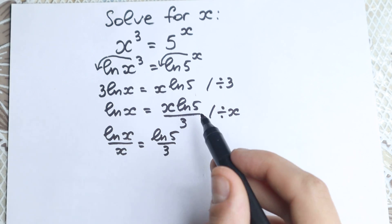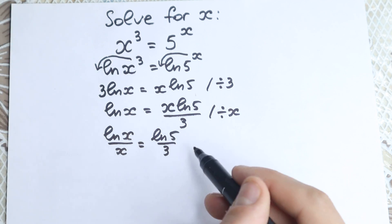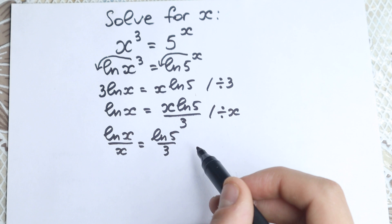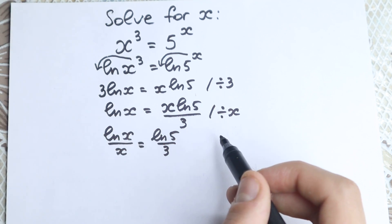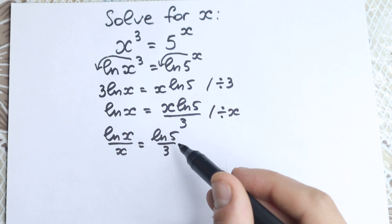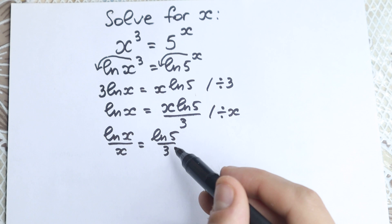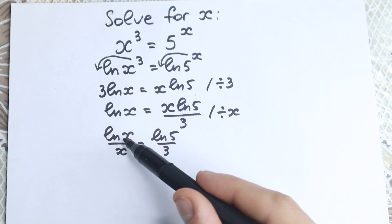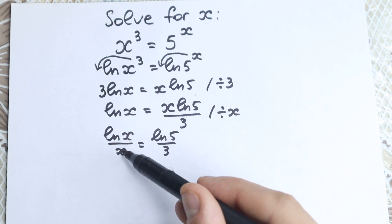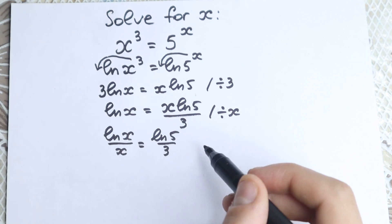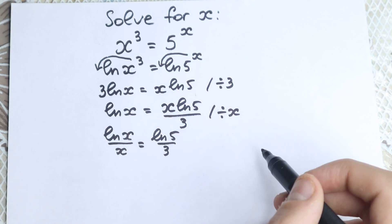We hope you understand this step — it was our first really important step: apply natural log and group constants on the right and variables on the left. Now if we look closely at this expression ln(x)/x = ln(5)/3, it's still hard to solve by inspection, and it's hard to find a great trick. We have ln(x) inside and x in the denominator, so it's really hard. For this question we need to know about a really important and interesting trick.